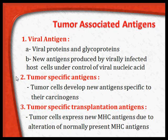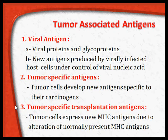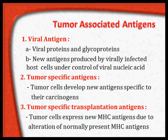Tumor-specific antigens mean the tumor cells themselves develop new antigens on their surface specific to their carcinogens. Tumor-specific transplantation antigens arise when tumor cells express new types of major histocompatibility antigens due to alterations of normally present MHC antigens. The tumors alter MHC antigens in such a way that they express new MHC antigens, which are called transplantation antigens.